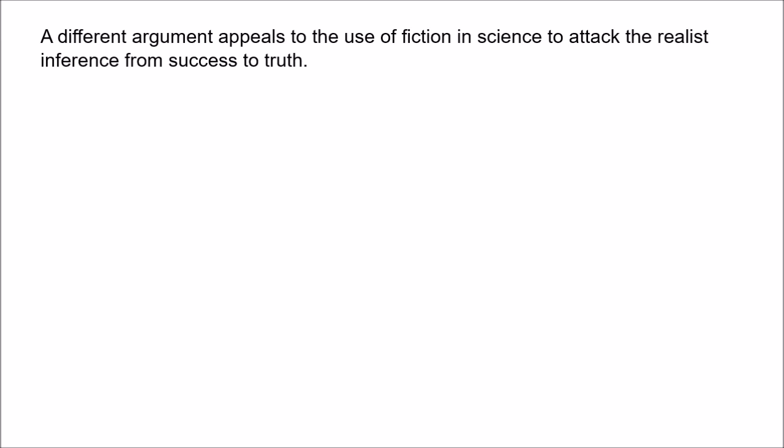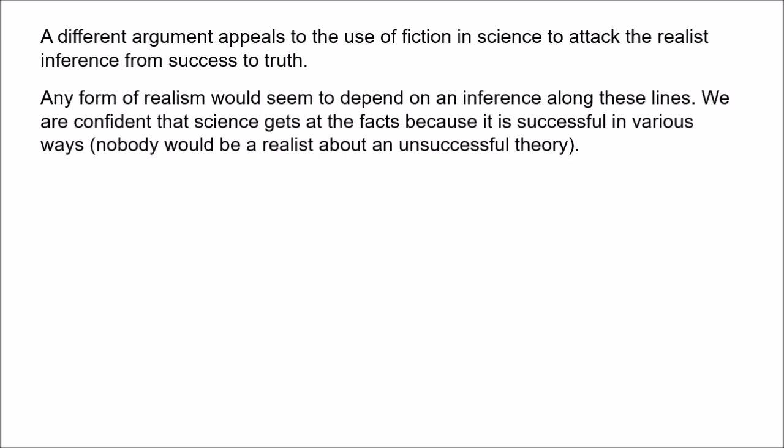We've seen that the central argument for realism is the no-miracles argument, where the idea is that the only way we can make sense of the striking success of our best scientific theories is by taking those theories to be true. There are different versions of the no-miracles argument, but I suspect that any kind of realism is probably going to rest on some sort of inference from success to truth. The feature of science that makes us confident that it achieves truth is its success, and different realists will appeal to different kinds of success. Many realists think it's successful novel predictions that justify belief, whereas an entity realist like Ian Hacking thinks it's manipulative success — building reliable instruments — that justifies belief. But either way there's some sort of move from success to truth.